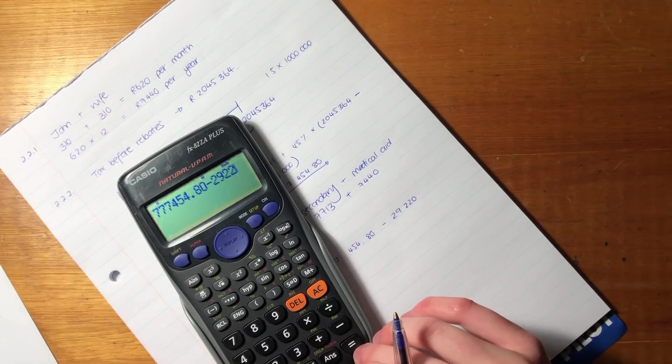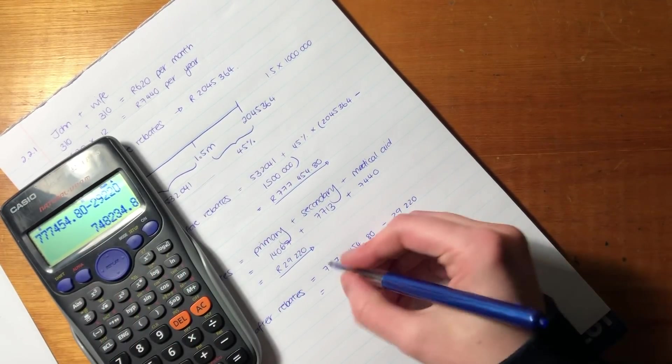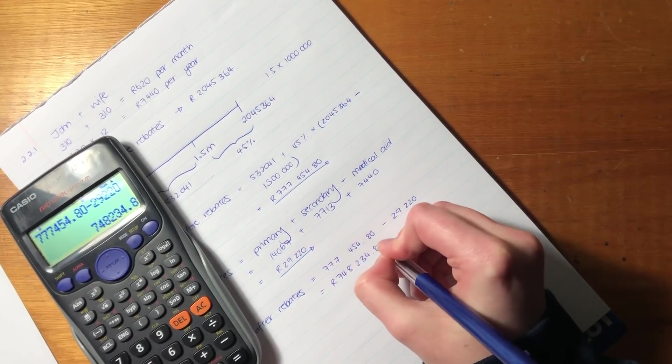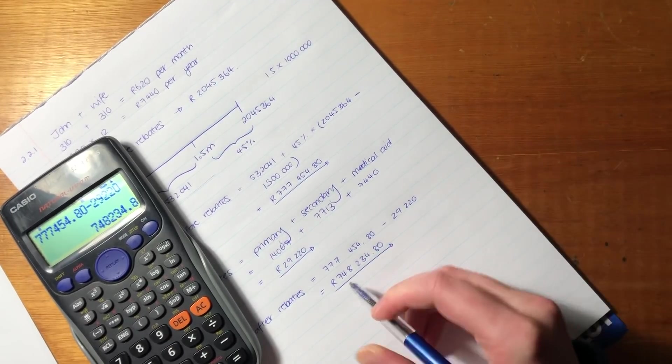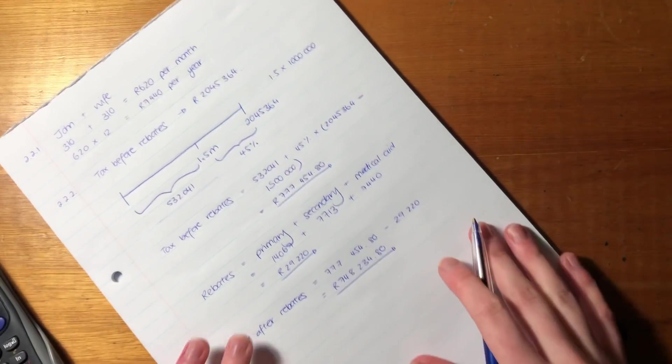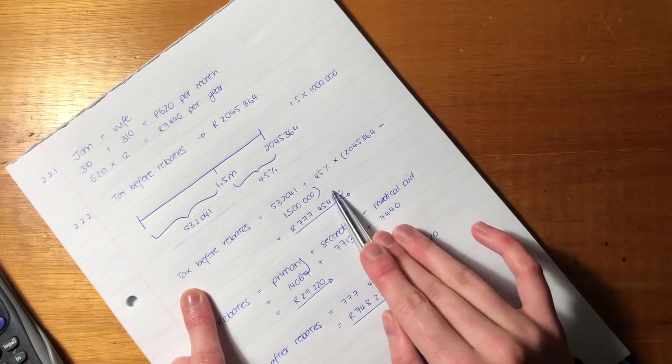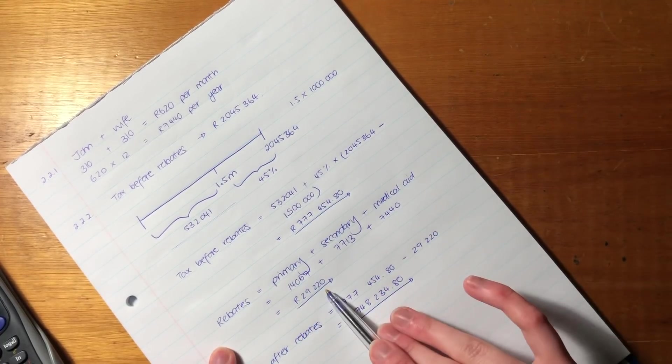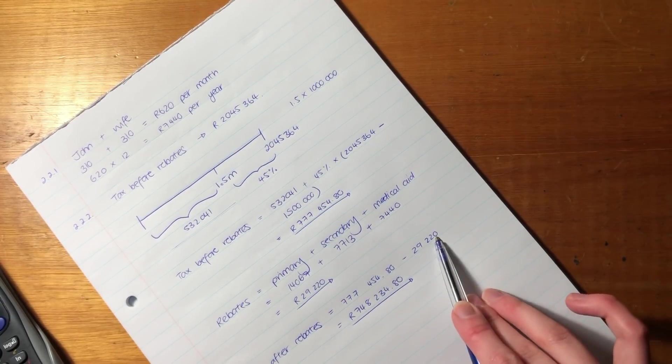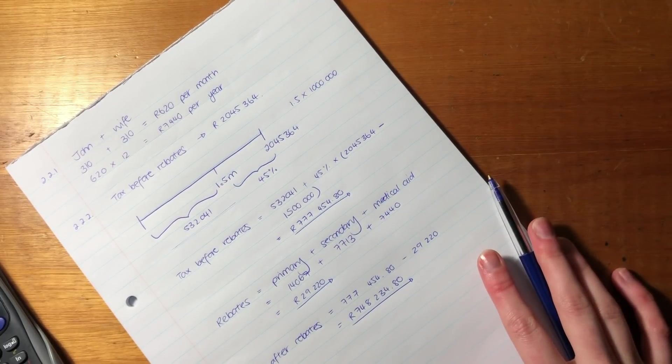And then we are a for away. Okay. So the total amount that John is going to pay to SARS for this tax year is 748,234.8. Okay. It's important, we calculate before rebates based on the income tax bracket. Then we calculate our rebates. Then we say total amount that he would have paid before rebates minus rebates. And that gives us our answer. Okay. So that's 2.2.2 done.